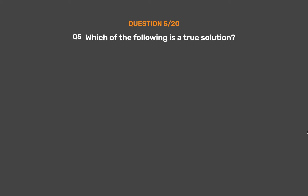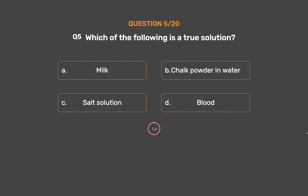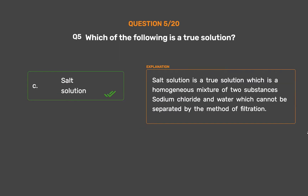Question number 5. Which of the following is a true solution? Option A: Milk. Option B: Chalk powder in water. Option C: Salt solution. Option D: Blood. The correct answer is Option C: Salt solution. Salt solution is a true solution — a homogeneous mixture of sodium chloride and water — which cannot be separated by filtration.